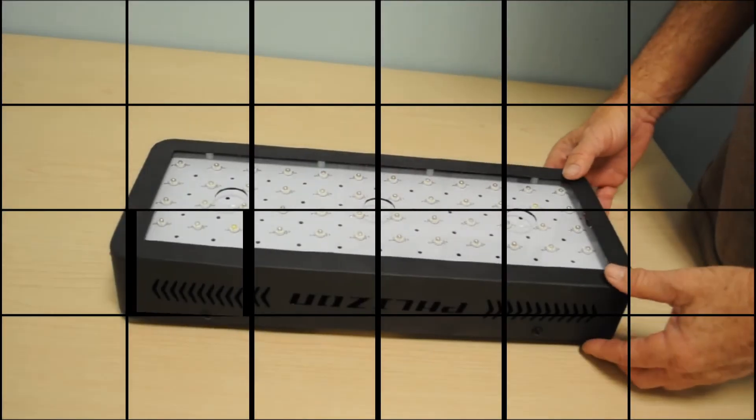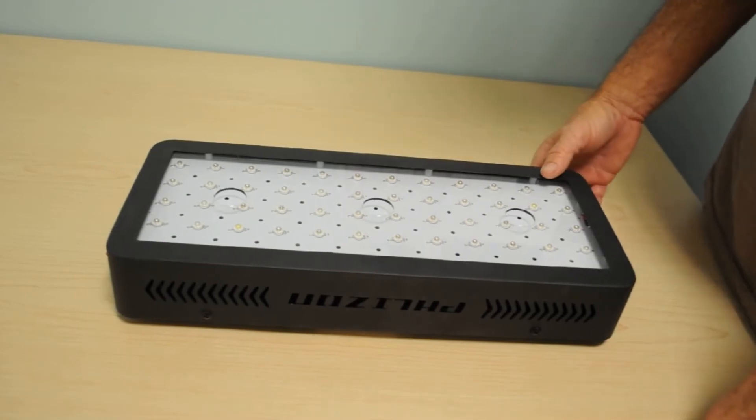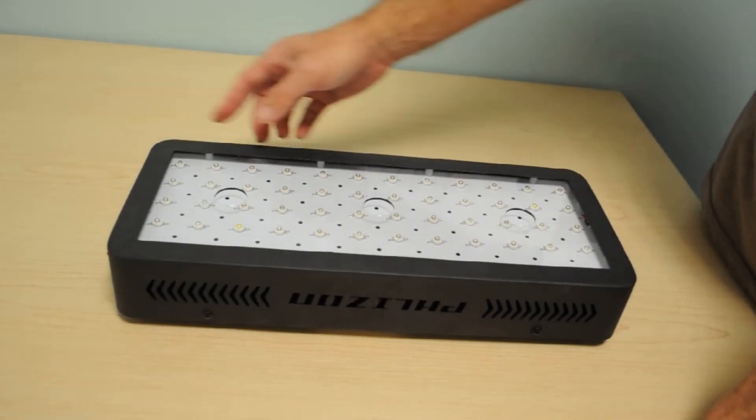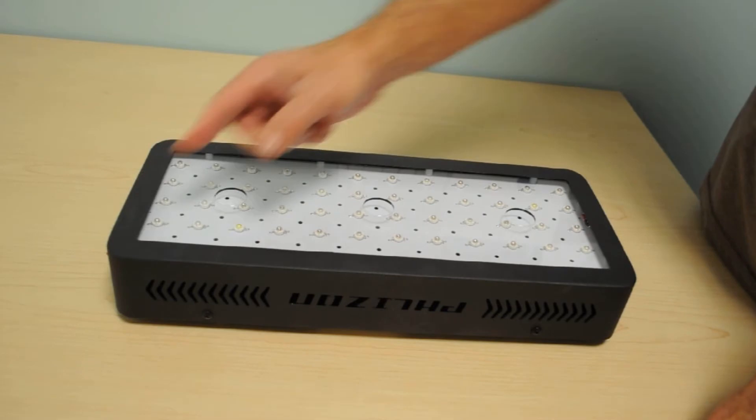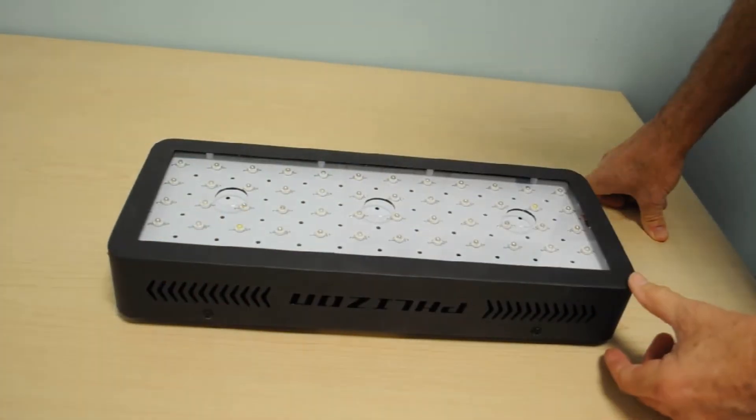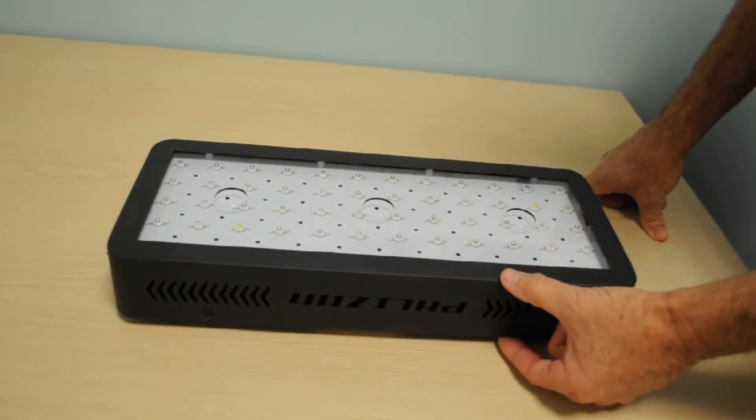So I'm anxious to get started. Let's take a look at the Flyzon. All right, so here's the Flyzon 600 watt, brand spanking new right out of the box. It is six and three-quarter inches wide and fifteen and three-quarters inches long by two and a quarter inches thick.